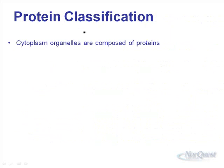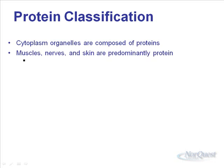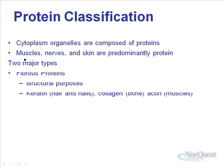We'll start with proteins. In terms of protein classification, cytoplasm organelles are composed of proteins — things like the Golgi apparatus, mitochondria, and chloroplasts all have proteins in their membranes. Muscles, nerves, and skin are predominantly proteins. There are two major types: fibrous proteins, which are structural proteins. Things like keratin, collagen, and actin form structures within our body — keratin forms hair and nails, collagen forms bone, and actin forms our muscles.